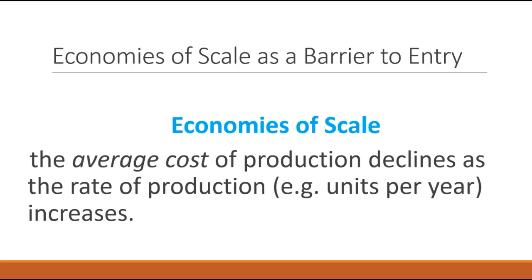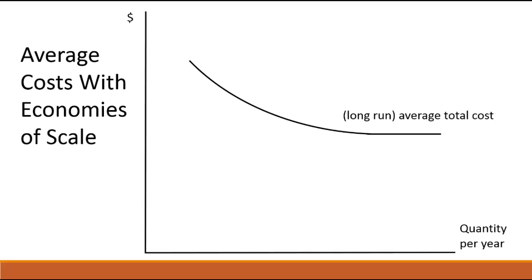So, as its rate of production, thought of in terms of the amount that it produces and sells every year, goes up, average costs are going to decline. We can illustrate that in a basic picture, just showing how average costs can decline as the scale of the firm's operations increase. Down the horizontal axis here, we have the quantity of the firm's product that gets produced and sold every year.